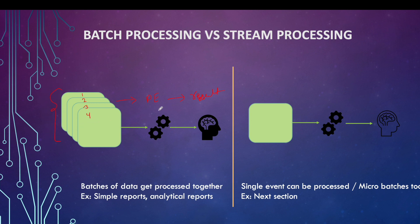In the batch processing system, we fed all of the data together and then the processing engine took care of that. Examples can be simple reports as well as analytical reports. In a stream processing system, we have events coming in — each event is processed individually.